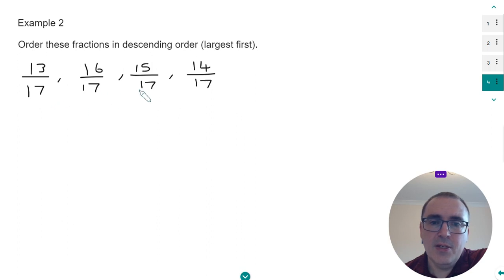Again the denominators are all the same, they're all 17. So we just need to look for our biggest number on the numerator which is 16. So 16 seventeenths is our largest fraction.